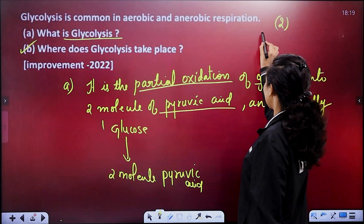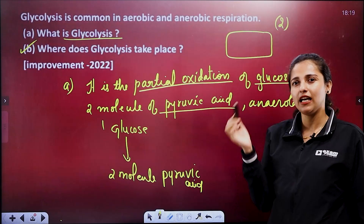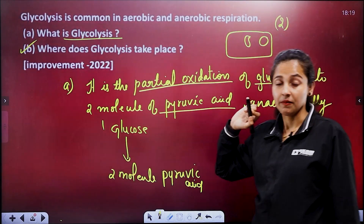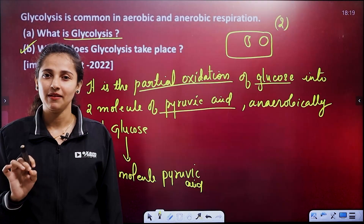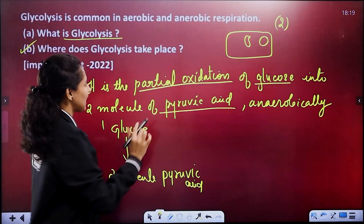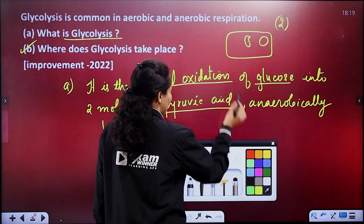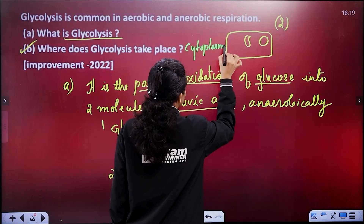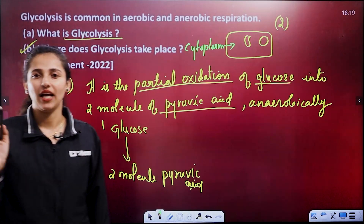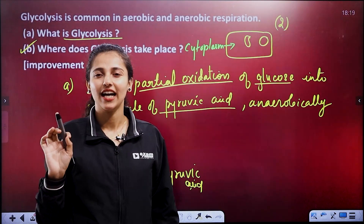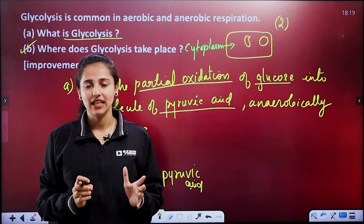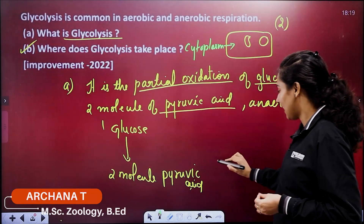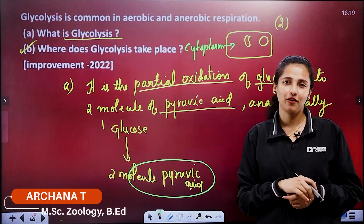If we take a cell, there is a nucleus and mitochondria. But glycolysis occurs in the cytoplasm of the cell. The cytoplasm is the location — that is an important point. The end product of glycolysis is two molecules of pyruvic acid.